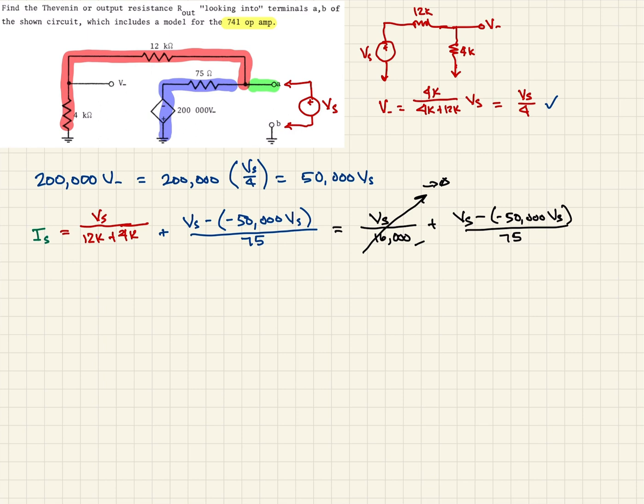And so the next thing we see is this part here. If we were to rewrite this, it would be VS. We can take out a VS. It would be 1 minus or actually 1 plus 50,000 over 75.